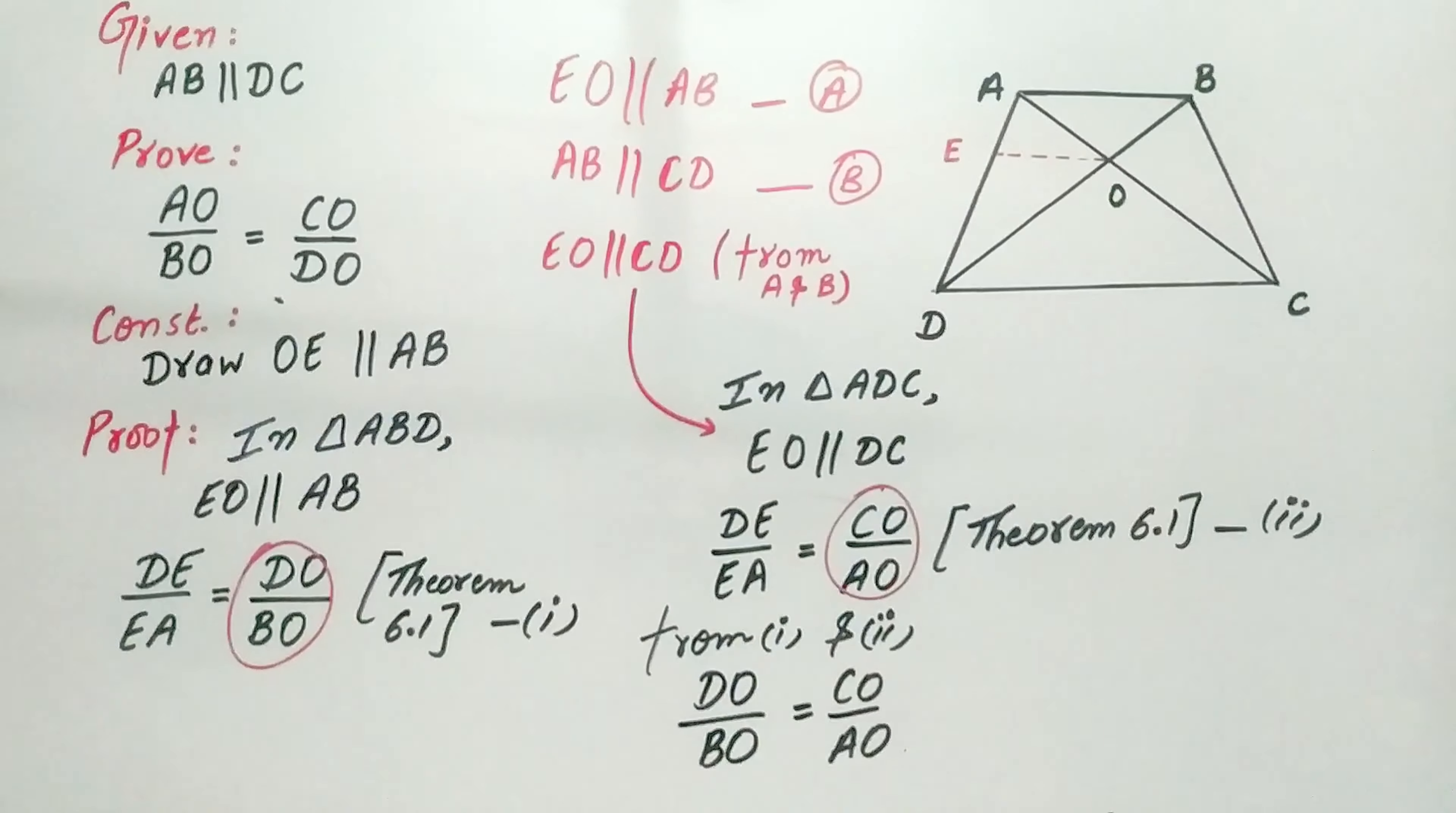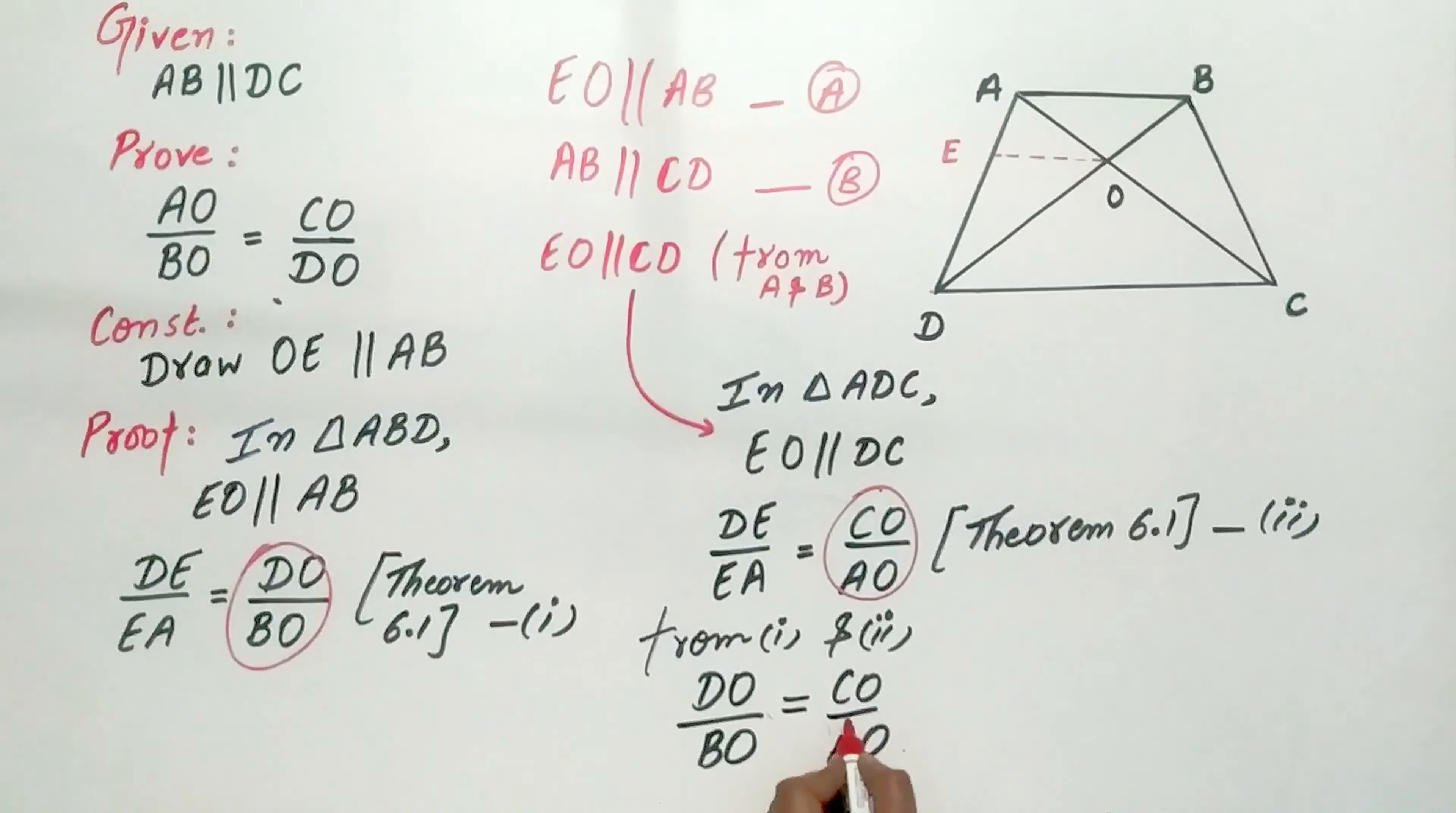But we have to prove AO by BO. So transpose the term. Now, transpose AO to left-hand side and DO to right-hand side.